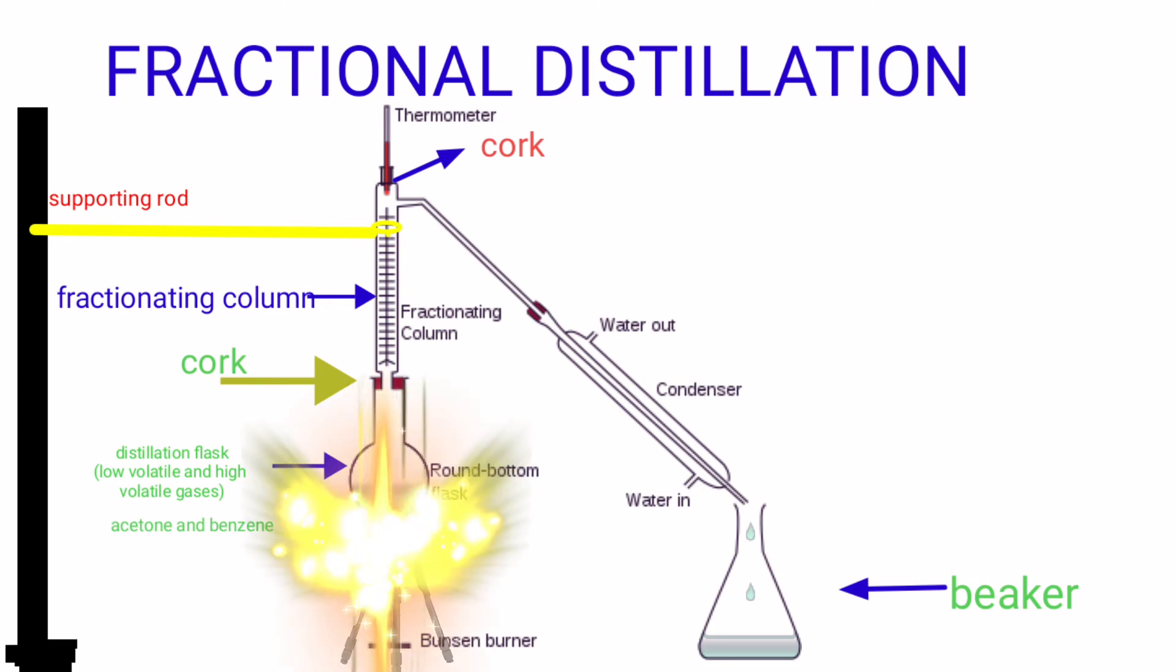By taking heat from the burner, the mixture of liquids evaporates. When the temperature is above the boiling point of acetone and below the boiling point of benzene, that is between 56 degrees Celsius and 80 degrees Celsius.